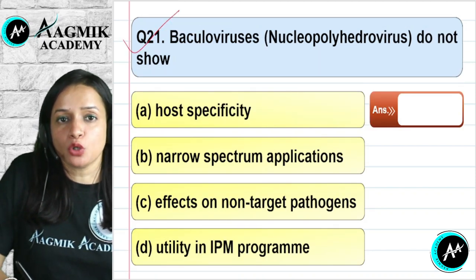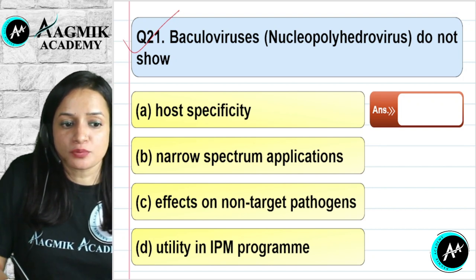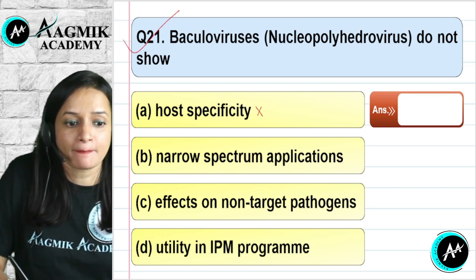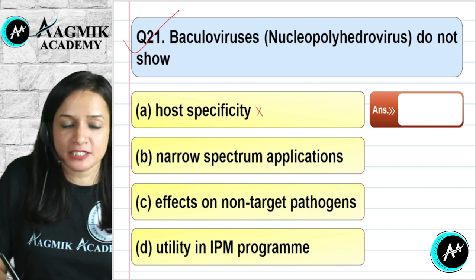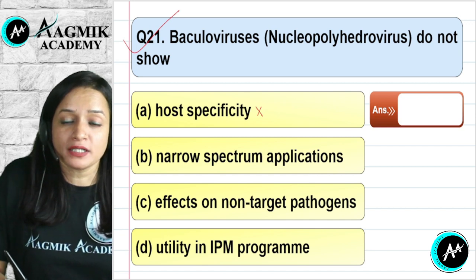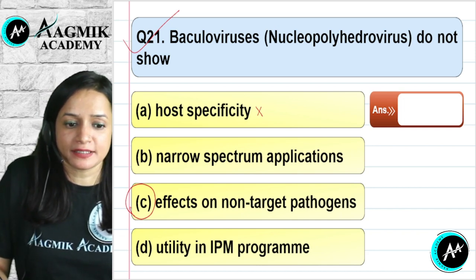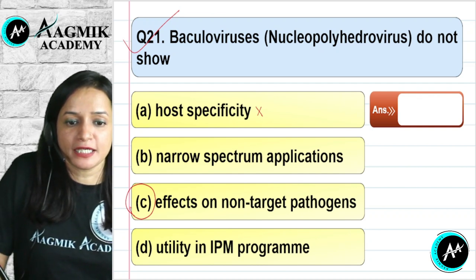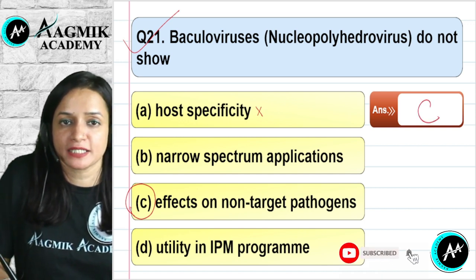Question number 21: Baculovirus (also called nucleopolyhedrovirus) does not show which characteristic? It is host-specific, so saying it does not show host specificity is wrong. It does show narrow spectrum application. The key characteristic it does NOT show is effects on non-target pathogens — it only attacks specific target pathogens. The correct option is C.